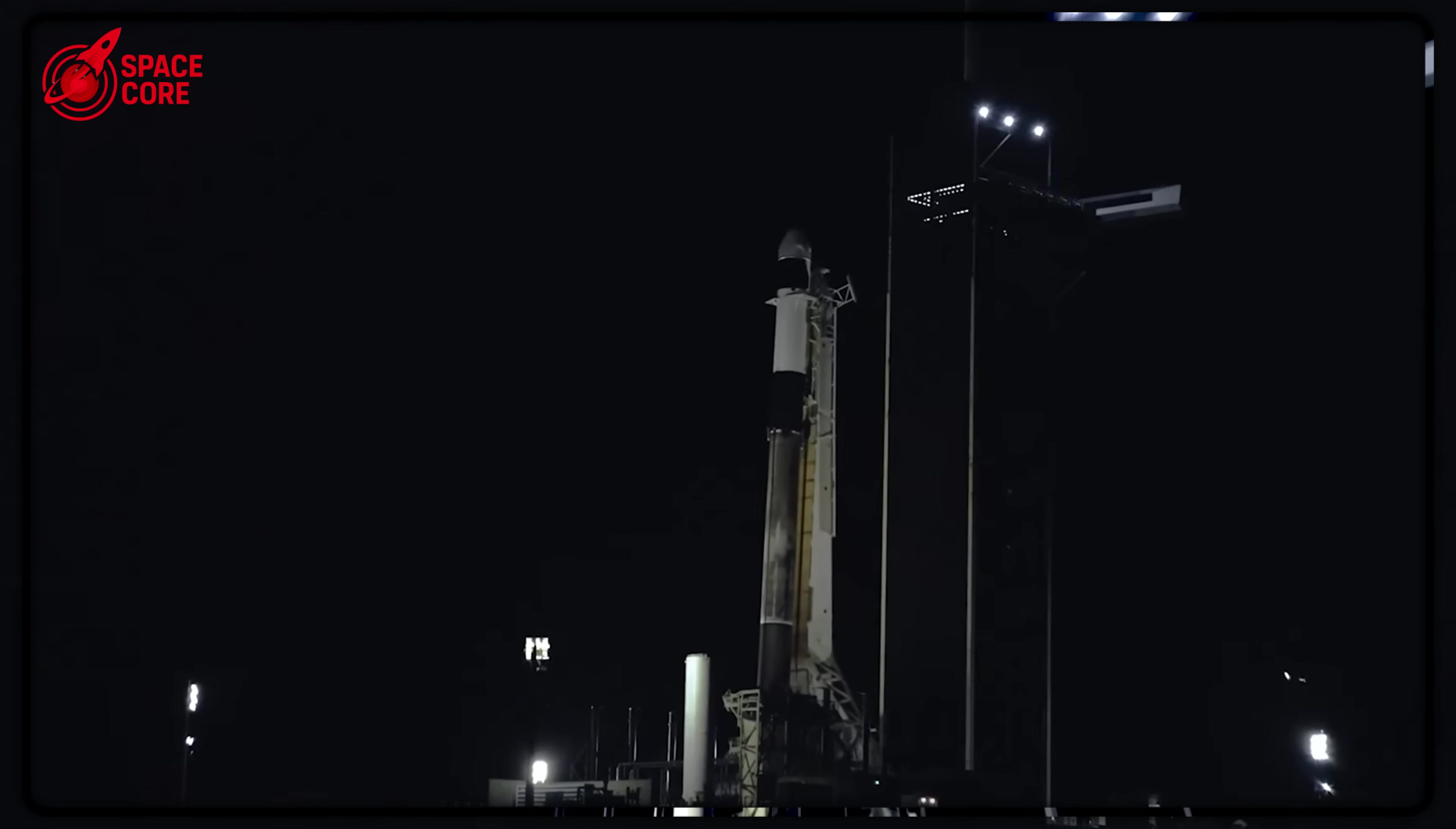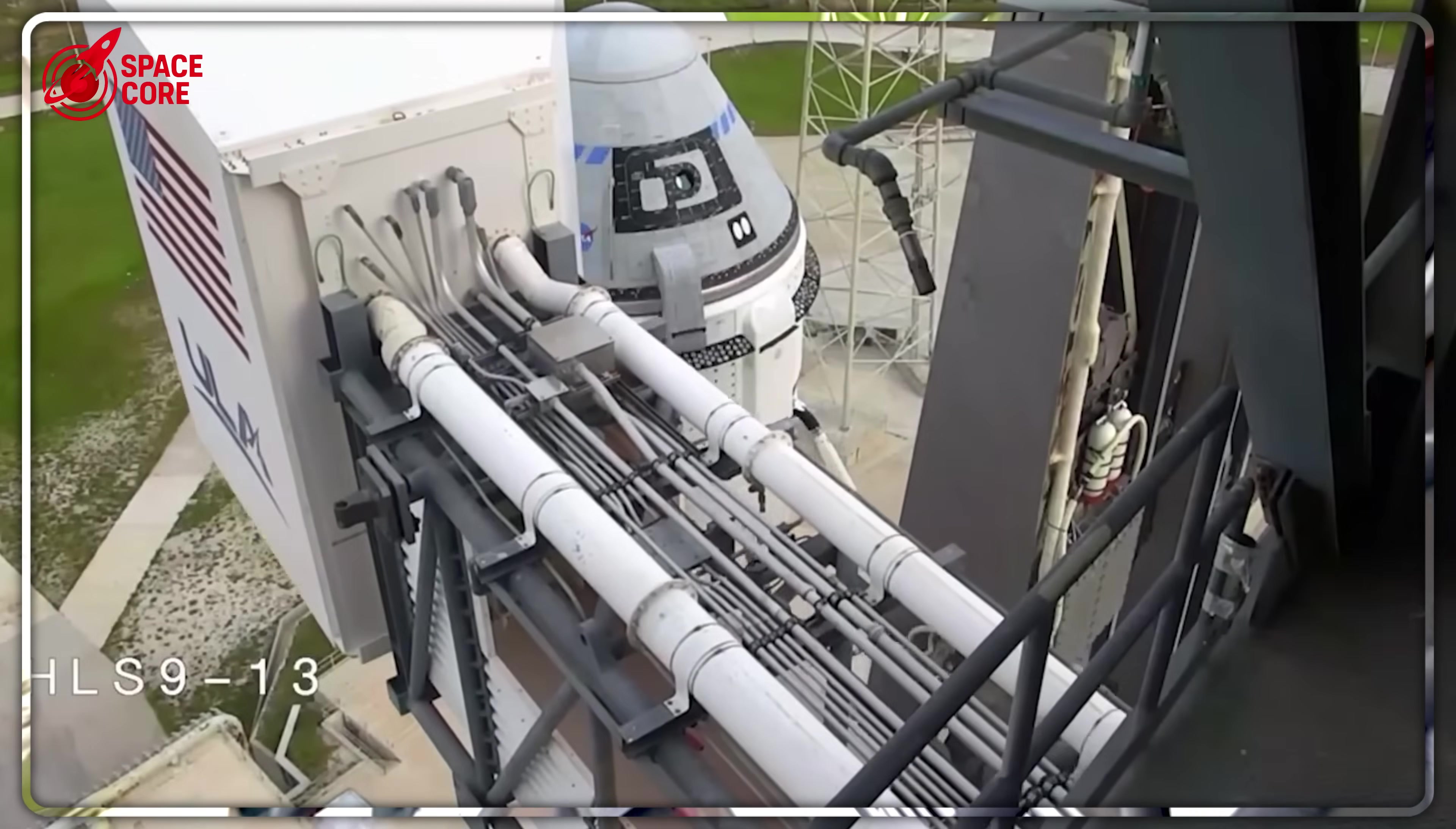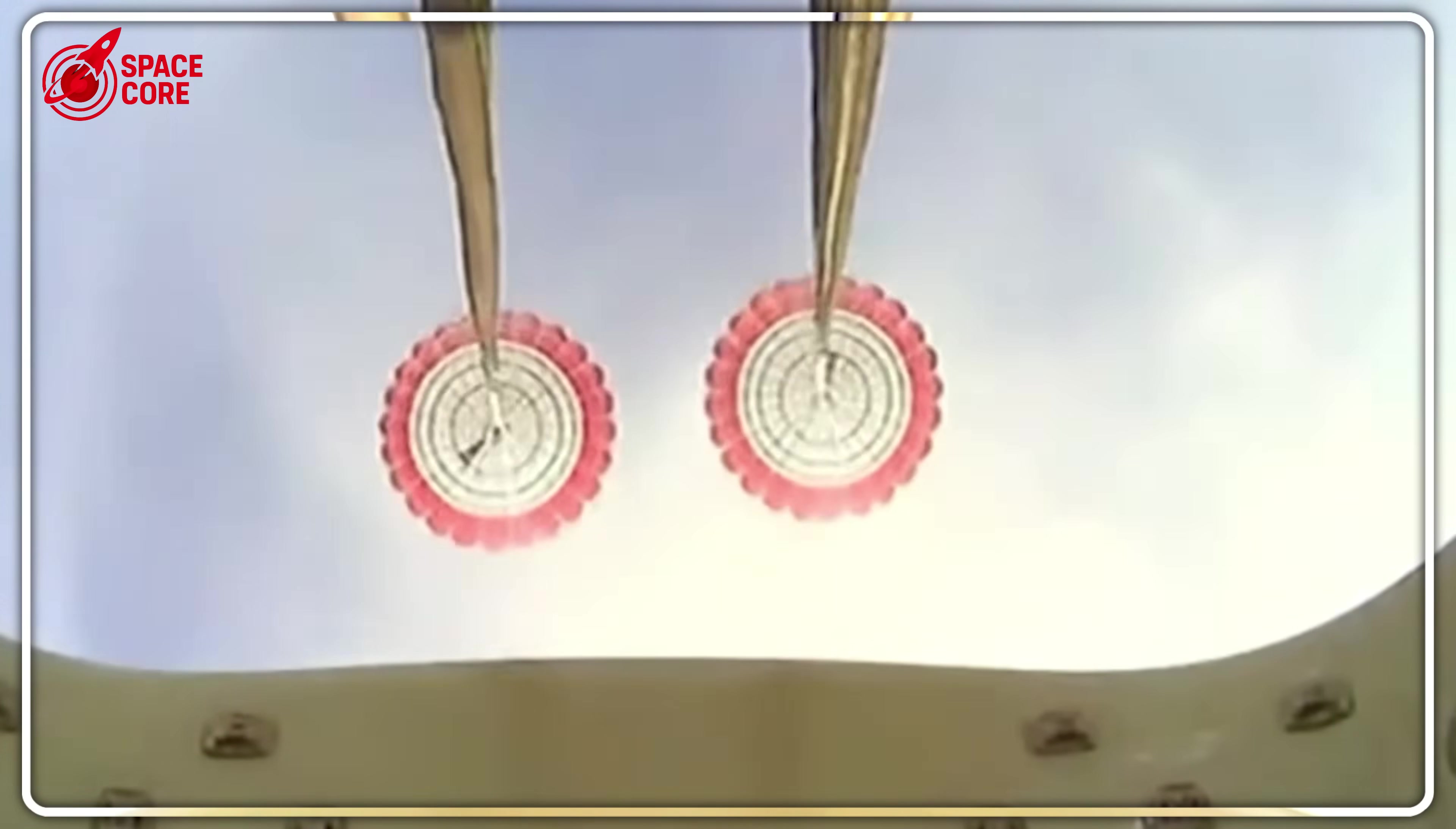But Musk had a crazy solution brewing. One so dangerous that NASA would eventually ban it outright. In 2014, Musk ordered his engineers to attempt the impossible. Make a spacecraft land like a rocket. Not with parachutes, not in water, but hovering in mid-air using pure engine power before touching down on solid ground. They called it propulsive landing and it required eight SuperDraco engines, each pumping out 16,000 pounds of thrust.